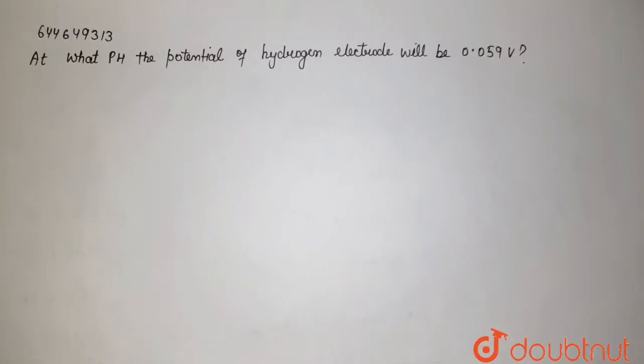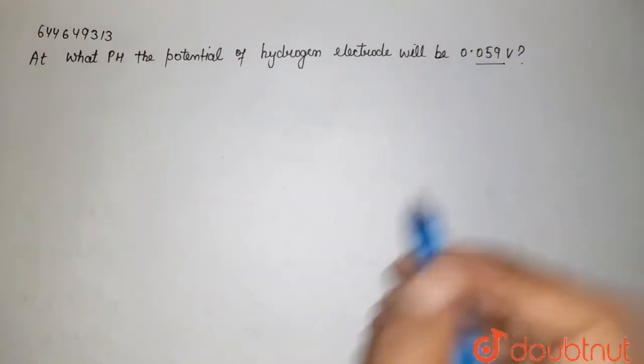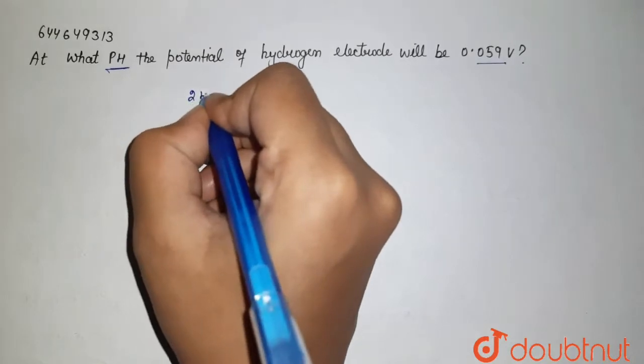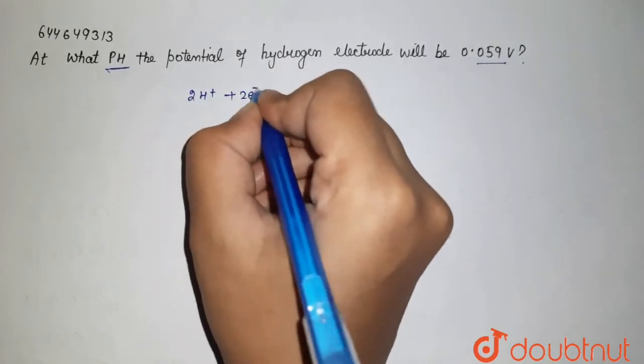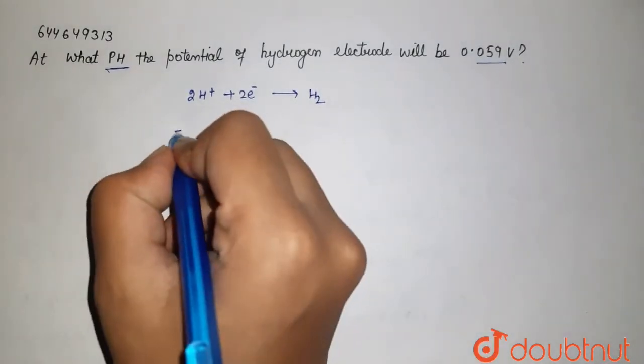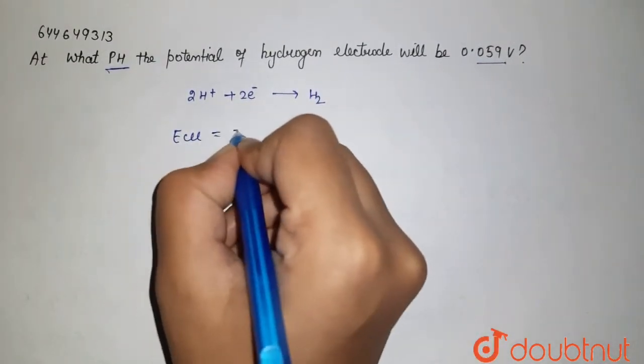We have to find the pH when the hydrogen electrode potential is 0.059V. When hydrogen accepts electrons, it gives hydrogen gas. From the Nernst equation, E_cell equals E°_cell